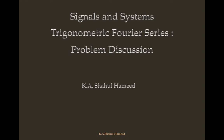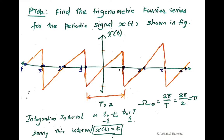In this session, we are going to discuss a problem related to Fourier series analysis. Find the trigonometric Fourier series for the periodic signal x(t) shown in the figure. This is actually a triangular waveform with time period T equal to 2.